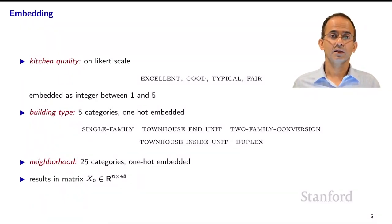The kitchen quality is a field which is stored on a Likert scale. The kitchen is rated excellent, good, typical, fair, or poor. Though I don't think there are actually any entries in the dataset that receive a poor rating. And this is encoded as an integer between 1 and 5 after we embed it. The building type is a categorical field. This is embedded one-hot and so it's embedded as a five-dimensional vector, one of the canonical unit vectors with a 1 in 1 position and 0 in all the other positions. The five different categories are single-family, townhouse end-unit, two-family conversion, townhouse inside unit, and duplex. There's also a neighborhood field. There are 25 different neighborhoods, so it's a categorical data field. And this is also one-hot embedded.